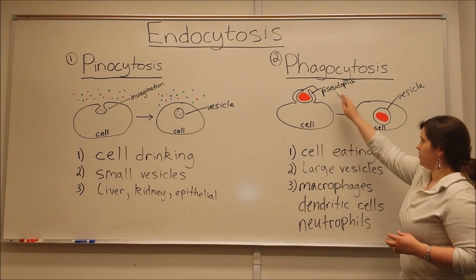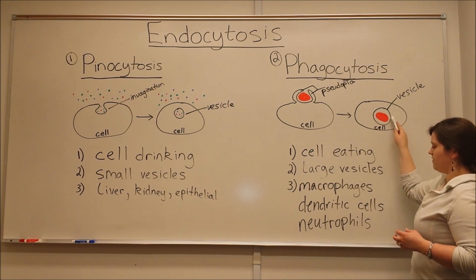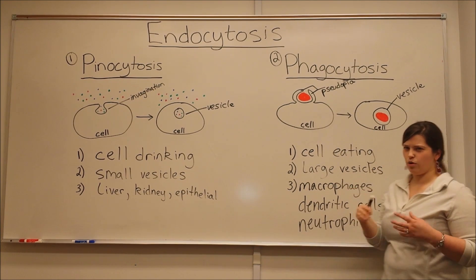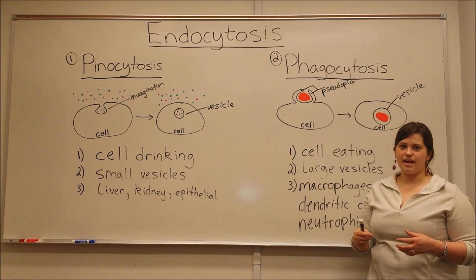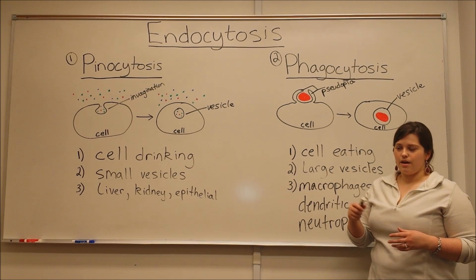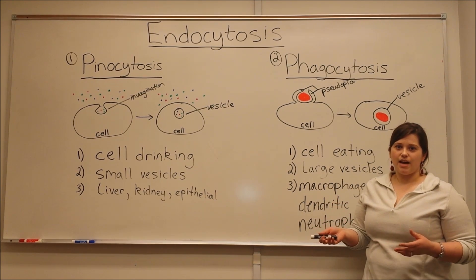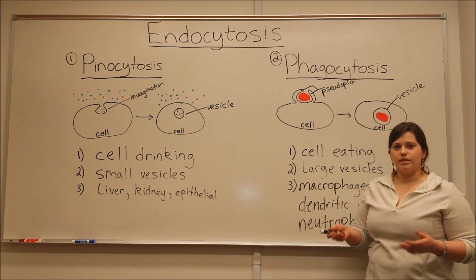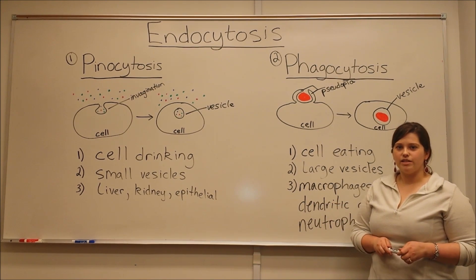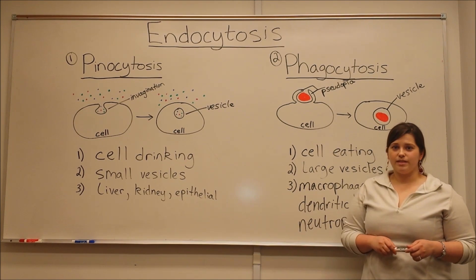Once these components come into the vesicles, they get broken down by enzymes. This is a way that the immune system protects us from these foreign pathogens. And that's the process of phagocytosis.